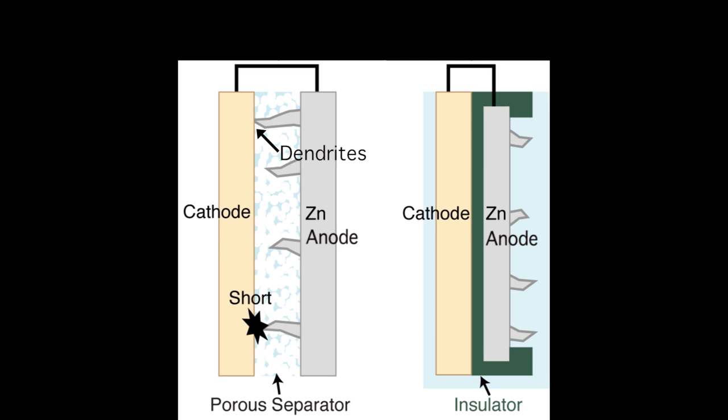To prevent shorting, Stanford engineers used an insulator to trap the dendrites on the anode so they never reach the cathode.